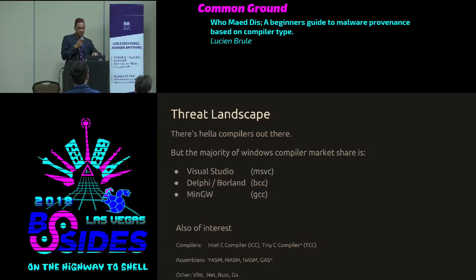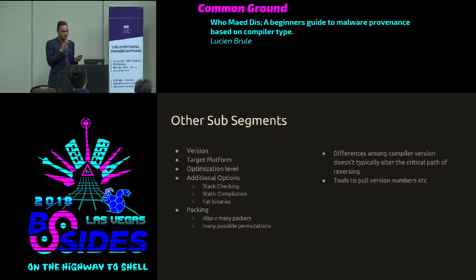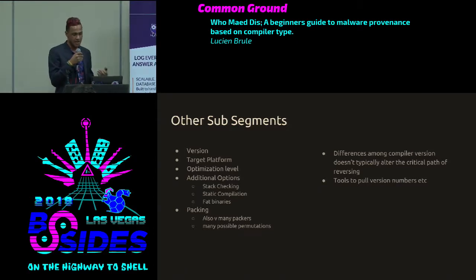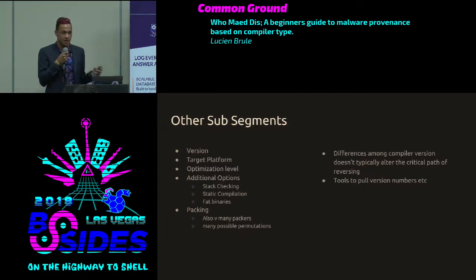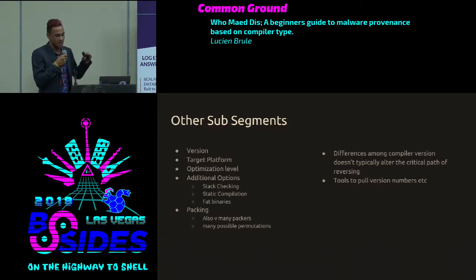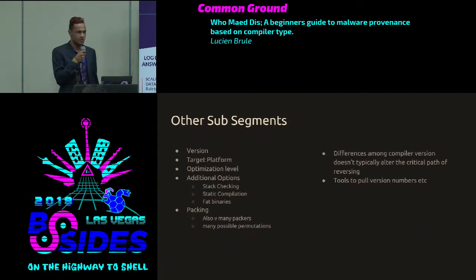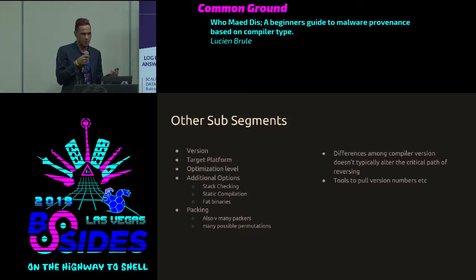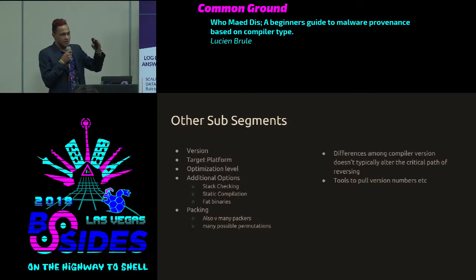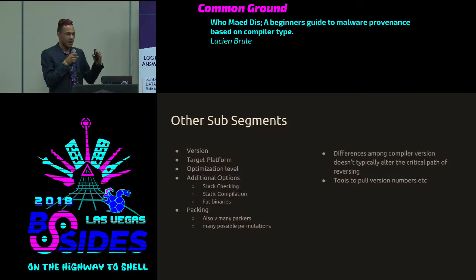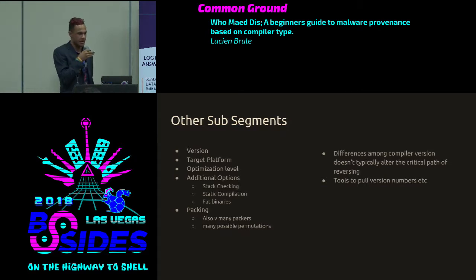There are sub-segments to all these things. Looking at Visual Studio, Delphi, and MinGW, we have different versions, target platforms (32-bit vs. 64-bit), additional options like stack cookies, and static combination or including libraries inside the file. It could also be packed — a program that wraps your program and makes it harder to reverse engineer. There are tools to undo all of these things through normalization, which puts different sub-segments back into the original, unoptimized version for comparison.